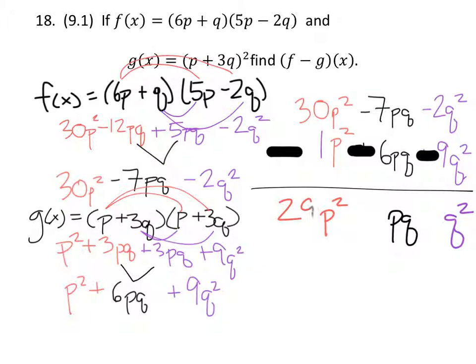So 30 minus 1 would be 29 and negative 7 minus 6 would be negative 13. Remember as well that the coefficient of each term is going to take the sign to its left as the operation of addition or subtraction.